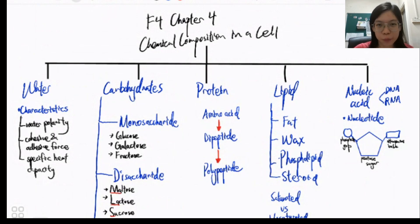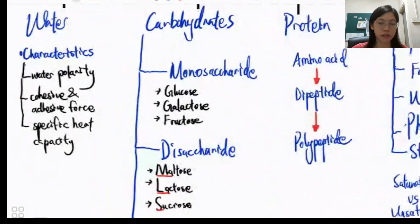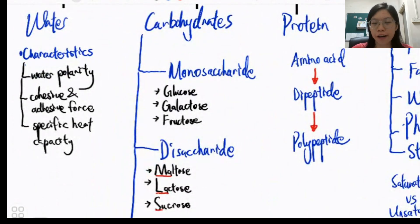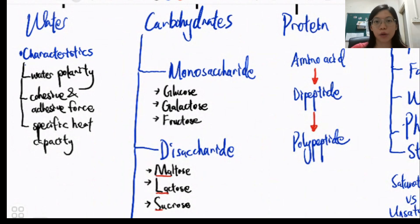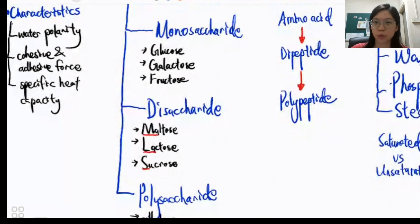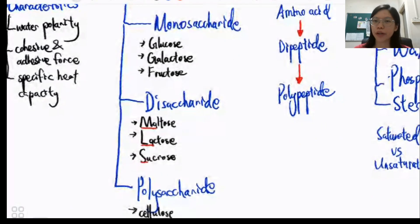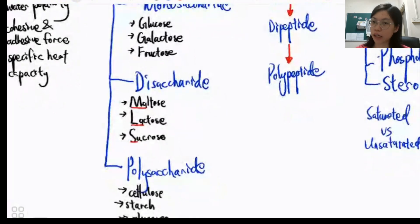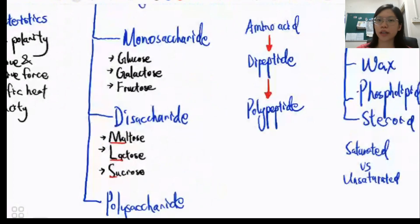Before I enter the water topic, I'm going to give you an overview of what you'll learn in general. For water, we'll learn 3 characteristics — what makes it different and gives it its very useful function. Besides that, we also learn carbohydrates, whereby the monomer is called monosaccharide, which branches out into examples, including disaccharide and polysaccharide, which is a polymer.